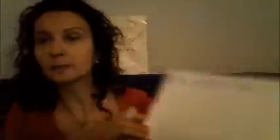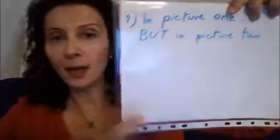So what is the homework this time? The homework will be a description of these differences. Please make a description like this: you write a number, and you say — in picture one, blah blah blah, but in picture two, blah blah blah. Use: there is, there are, there isn't, there aren't. And remember the 'but'. It's not difficult and it doesn't take a long time, you will see.